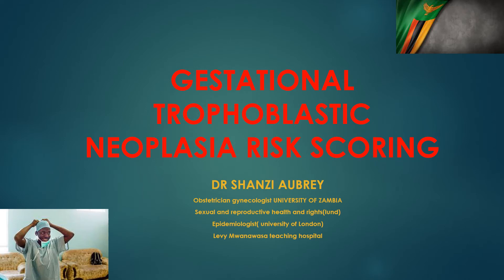Today we talk briefly about the risk scoring for gestational trophoblastic neoplasia. Once we make a diagnosis, we have to stage the patients, give them a prognostic scoring, and then refer them to a cancer disease hospital. I'm presenting this to show you the easy way of remembering the risk scoring and its parameters, so it's easy for exams when you're asked about the prognostic scoring for a GTN patient.